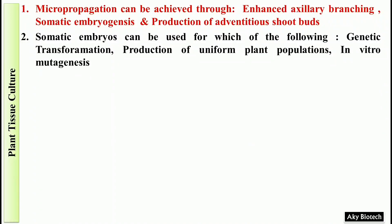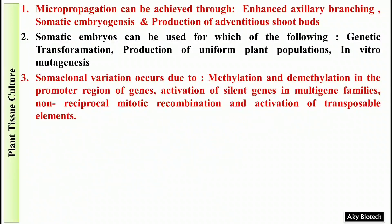Question 3 is related to somaclonal variation. Why does it occur? It occurs because of methylation and demethylation in the promoter region of genes, activation of silent genes in multi-gene families, non-reciprocal mitotic recombination, and activation of transposable elements.